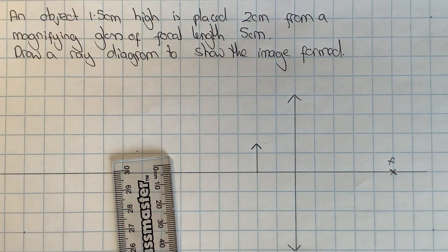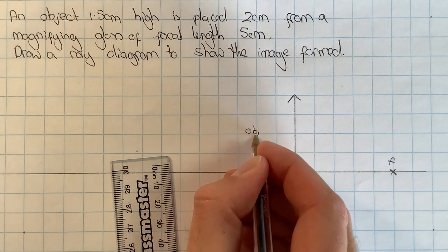Like in my previous video, I'm going to draw an arrowhead to show which way up the object is and label that as the object.